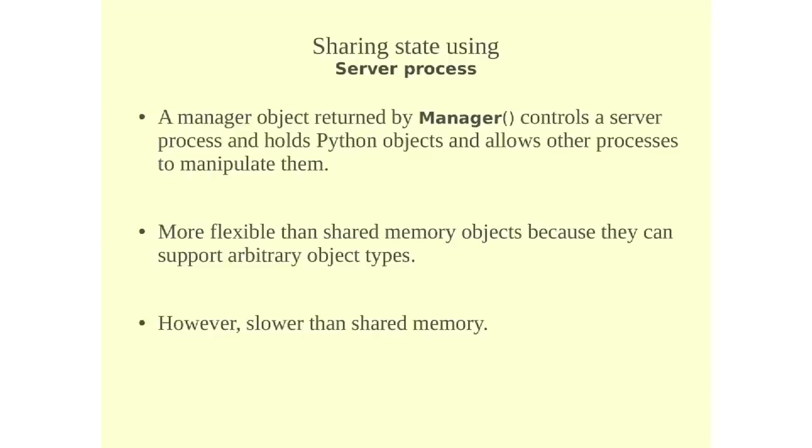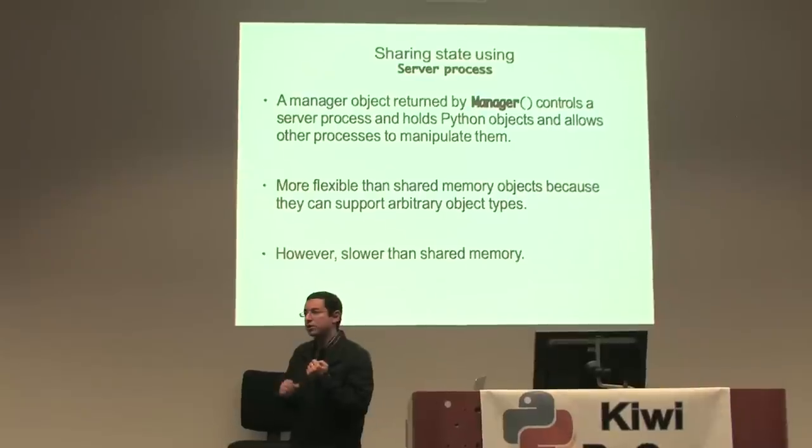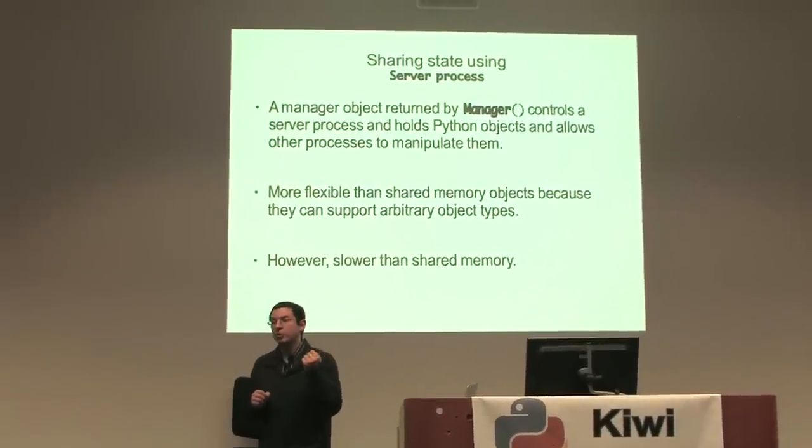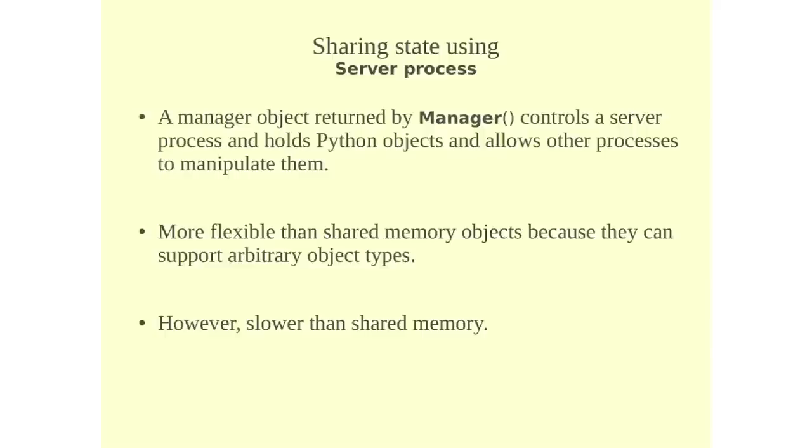Another way of sharing data between processes is a server process, which is created by a manager. You create an instance of manager. And it returns an instance which controls a server process and has access to its objects and provides a way for other processes to access these objects. It's more flexible than the value and the array because you can support any object types, arbitrary object types. But it is slower than the other option, which is the shared memory.